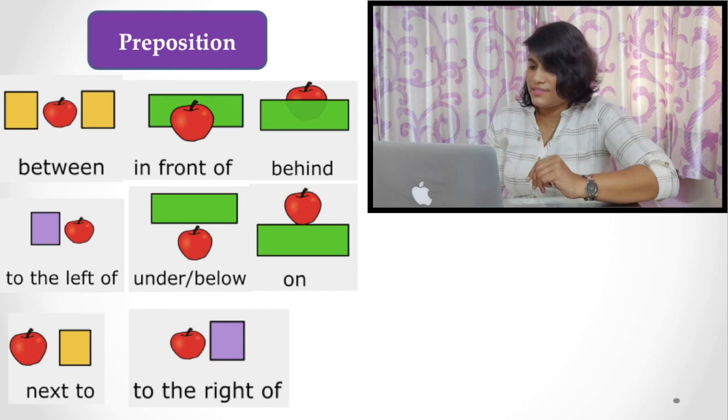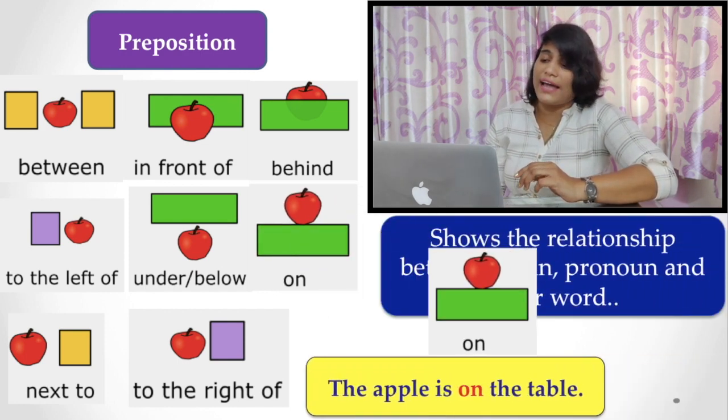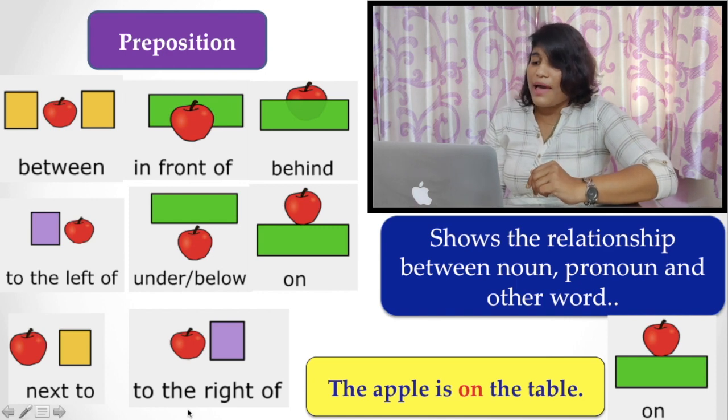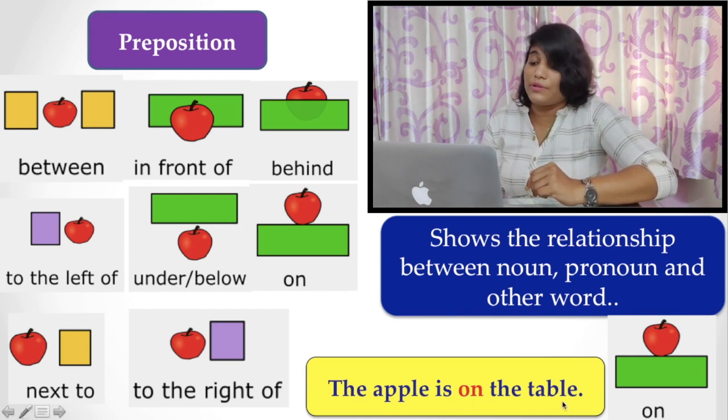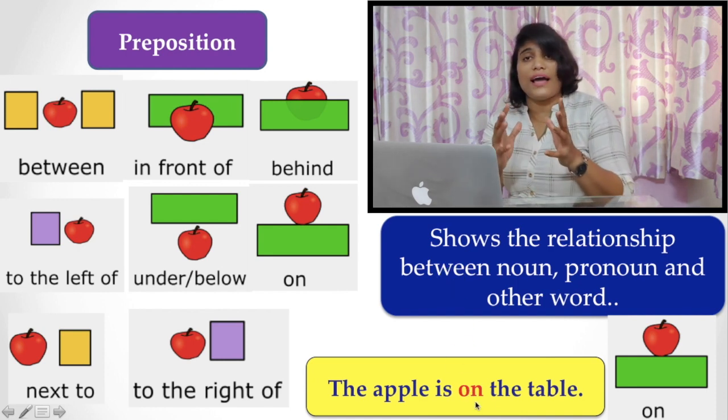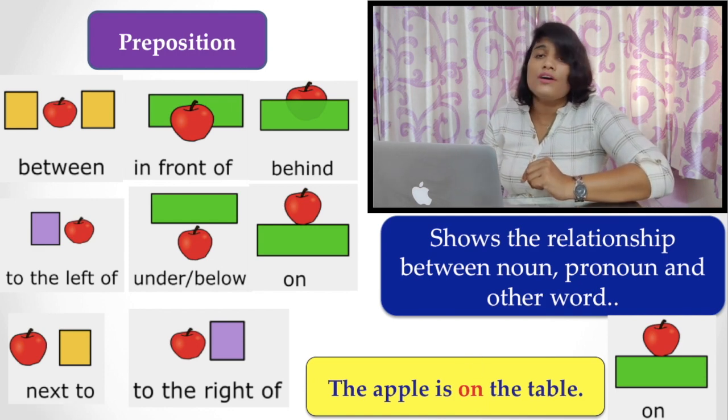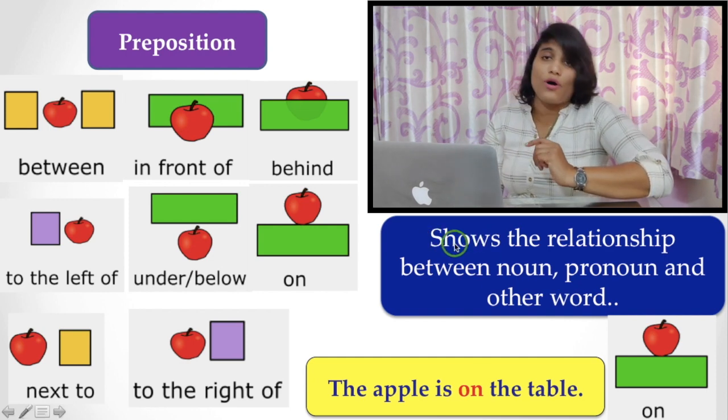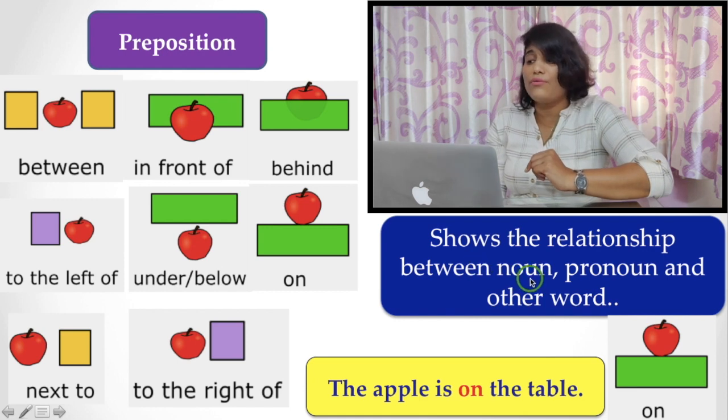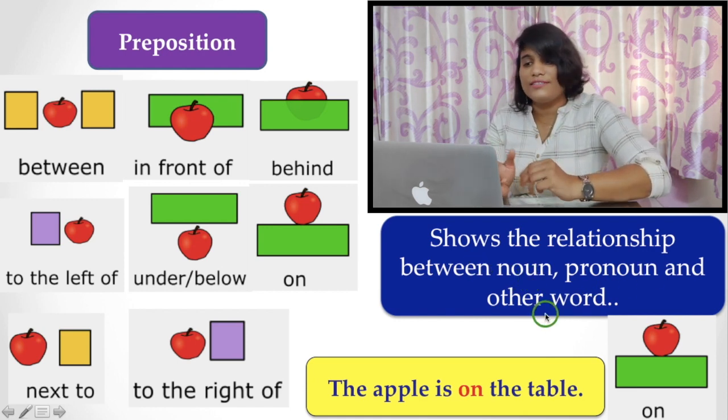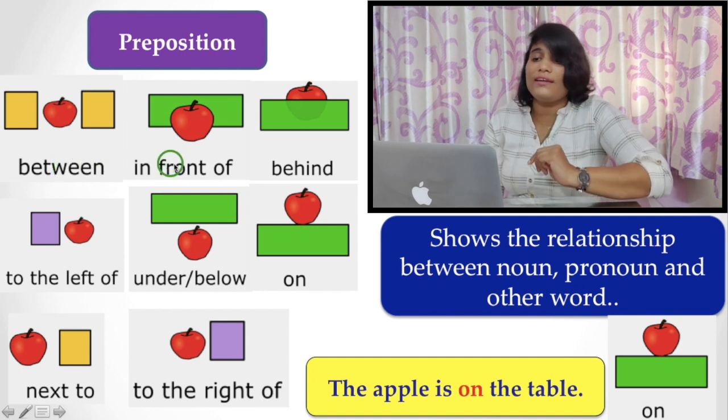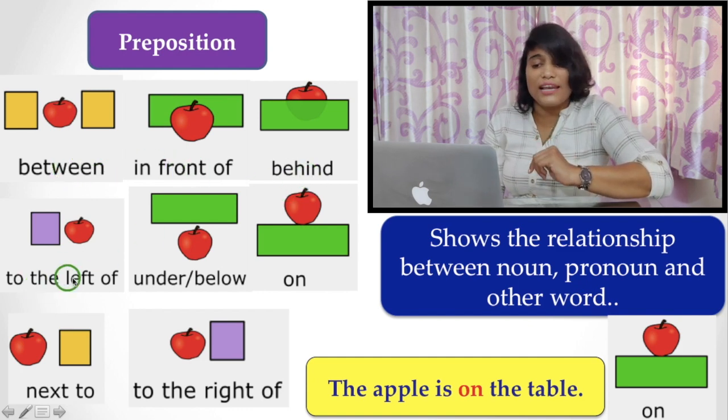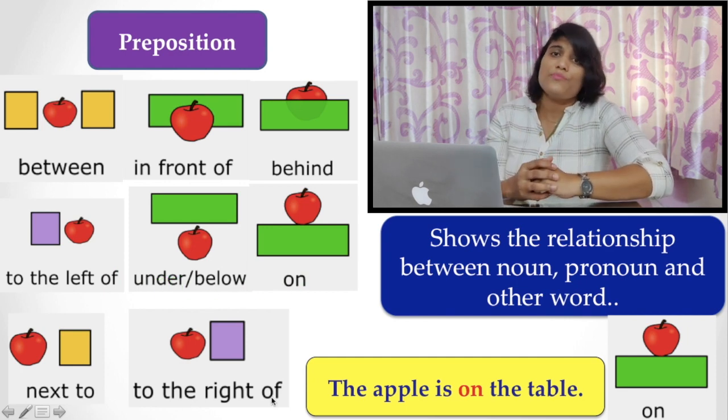Now the preposition. What are the prepositions? Let's see the examples and discussion follows. The apple is on the table. Here you find 'on' - that is a relation between a noun and another noun. The word 'on' shows the relation between apple and the table. Here, the preposition always shows the relationship between noun, pronoun, and other words. So these are the prepositions: between, in front of, behind, to the left, under, on, next to, to the right.